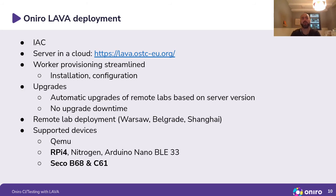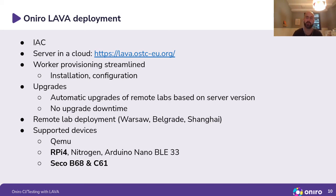How do we deploy Lava in the Oniro project? The whole concept is infrastructure as code. We've got the Lava server in the cloud, and worker provisioning is streamlined, meaning both installation and configurations are automatically deployed. We've got automatic upgrades of remote labs based on server version, which means whenever there's a new Lava version upstream, the only thing we need to do is upgrade the server and all the workers across all remote locations are upgraded automatically. This also includes no upgrade downtime.